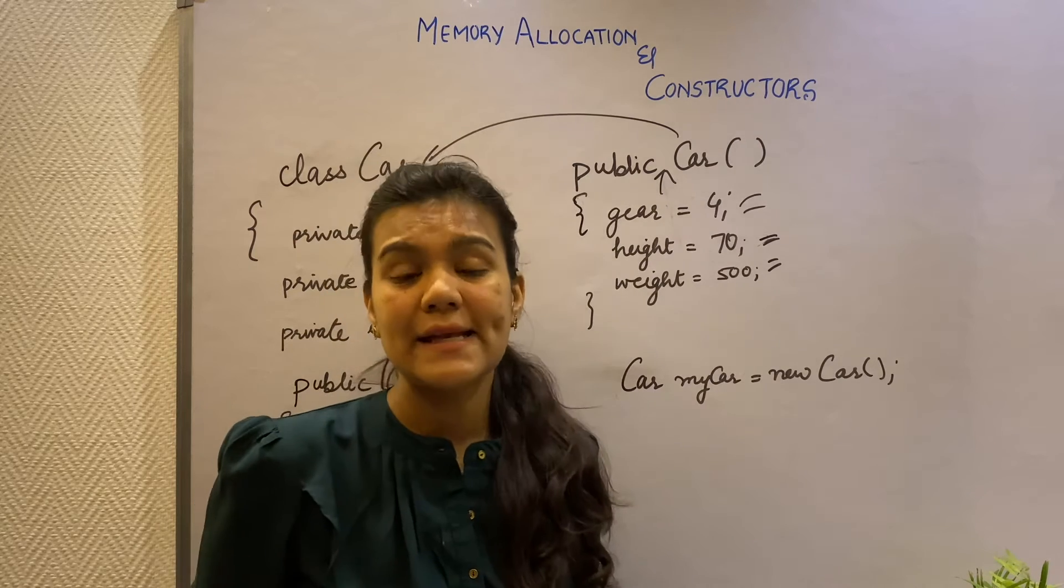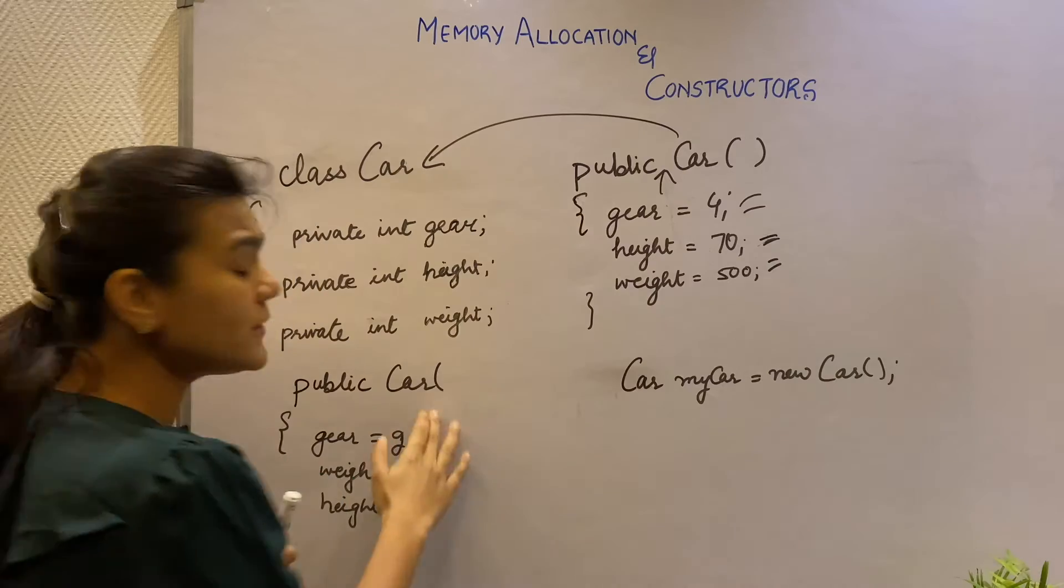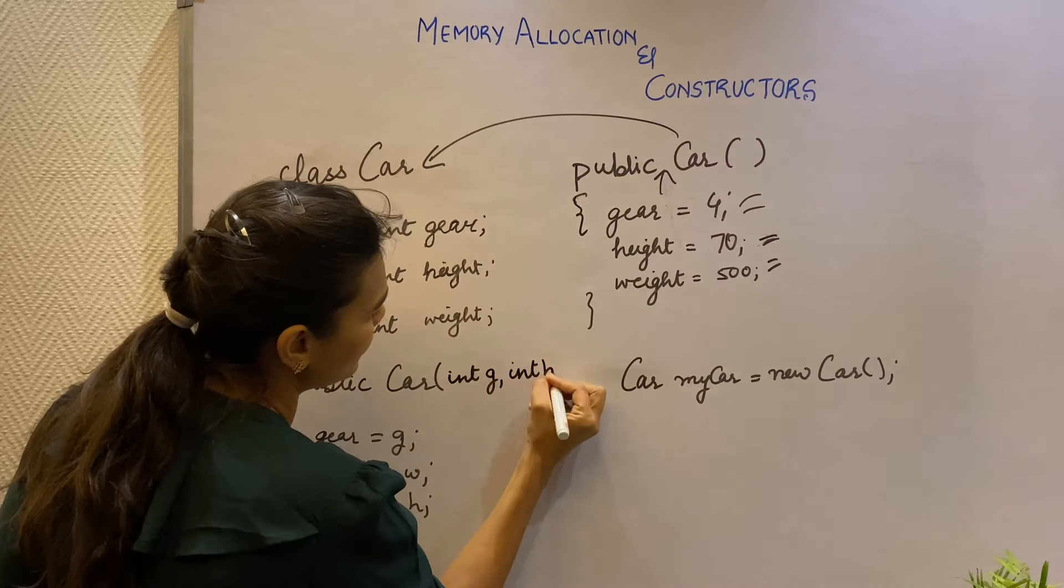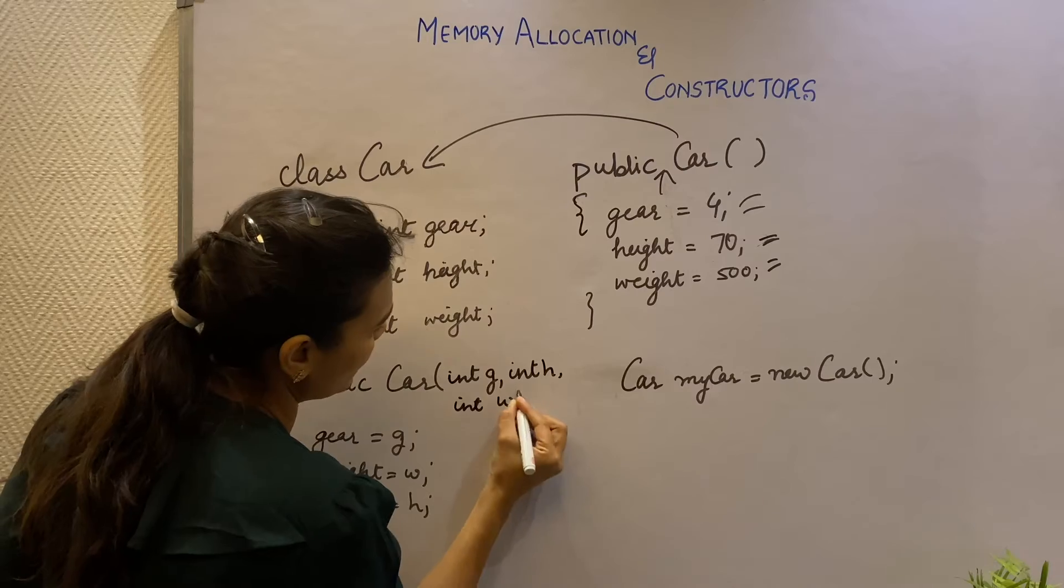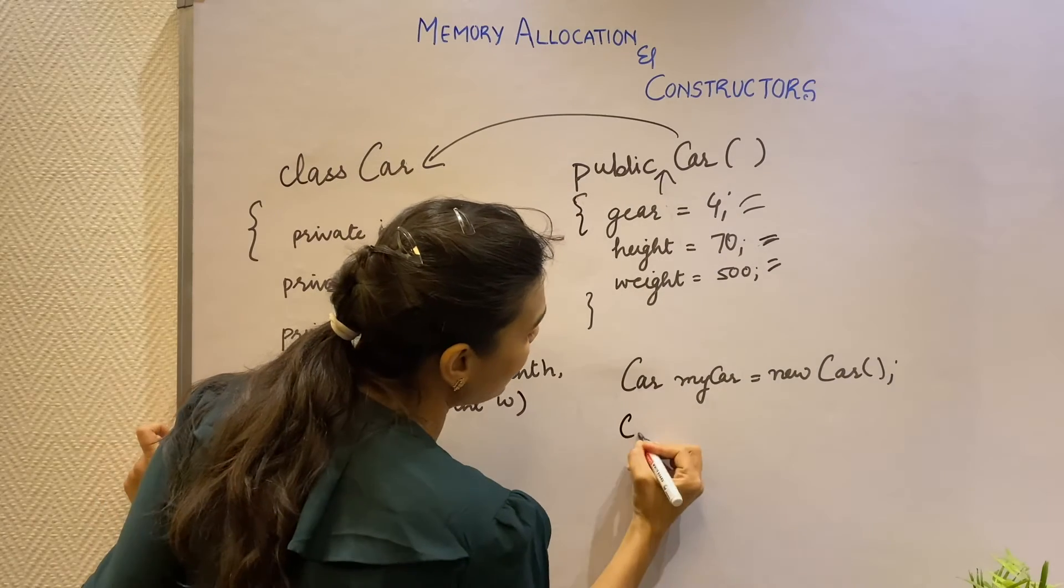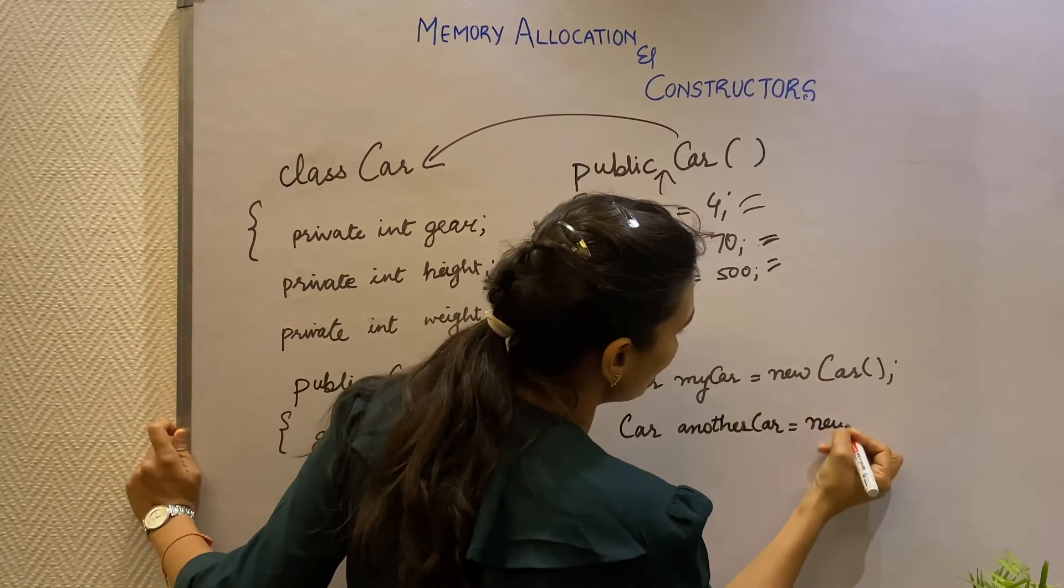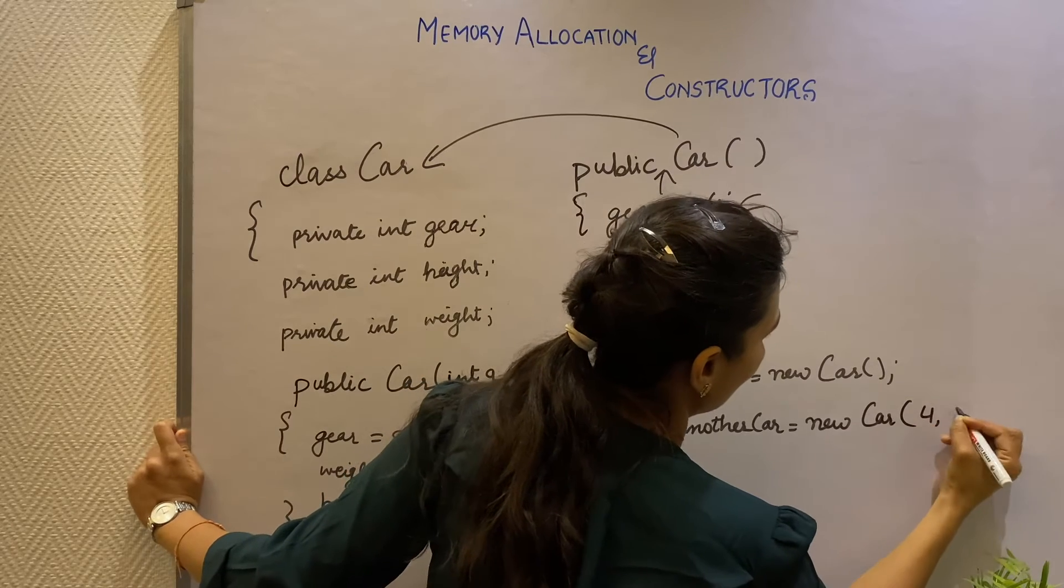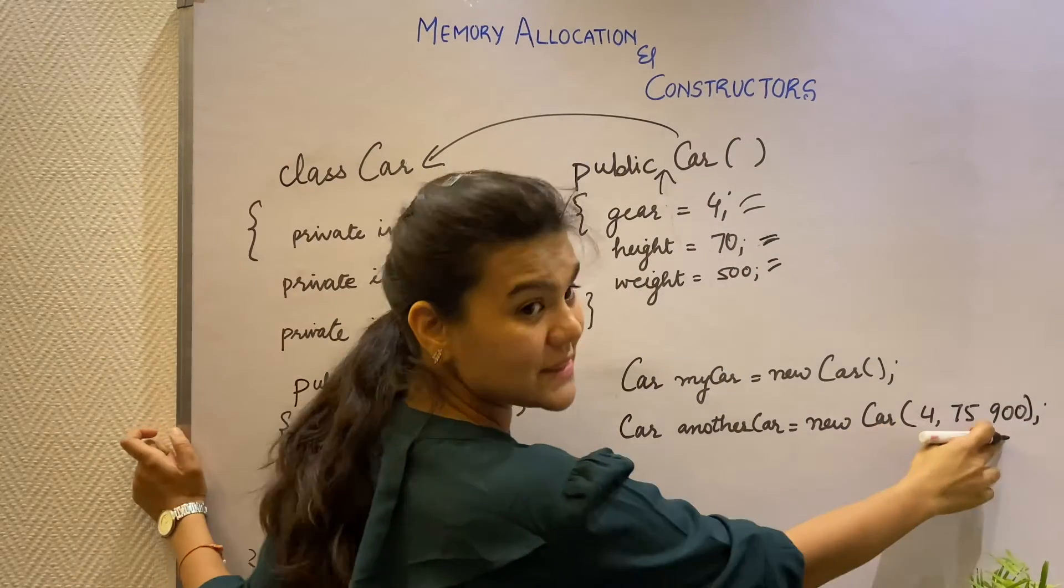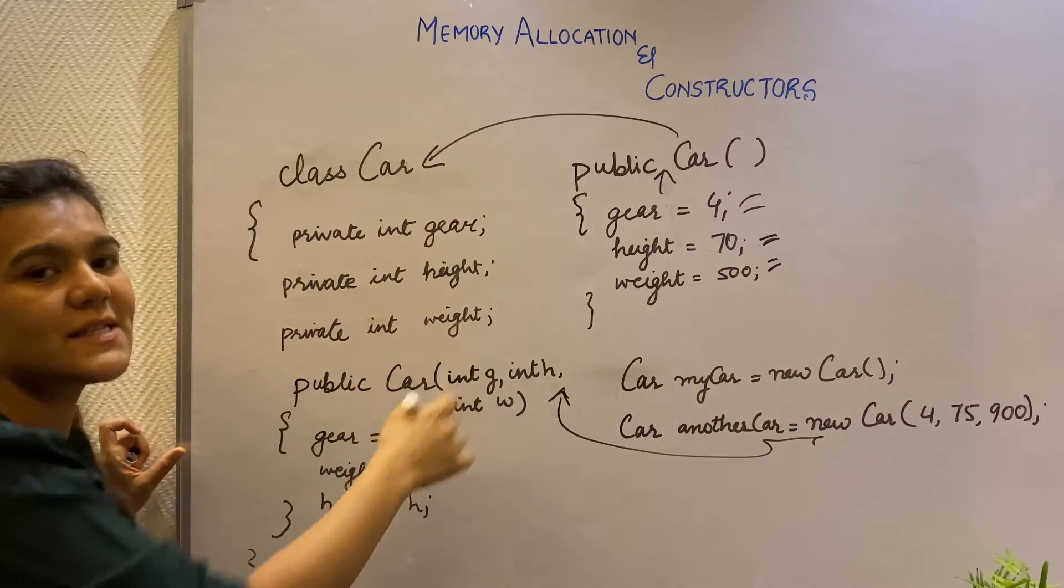Parameterized constructor takes in input parameters and initializes those values with all the properties. I have written another constructor here and I will take these parameters as input and assign each of these values to the properties. So when I create another car object, I can pass those values. And this time, since I'm passing these values, my parameterized constructor will get called and all the properties will get initialized.